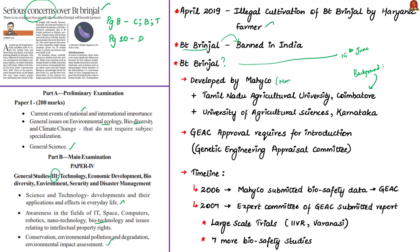For introducing a genetically modified crop in India, the crop has to undergo scrutiny by the Genetic Engineering Appraisals Committee (GEAC). In 2006, Mahyco submitted biosafety data to GEAC for permission to conduct large-scale trials. The GEAC set up an expert committee, which submitted its report in 2007, approving large-scale trials and recommending seven more biosafety studies for reconfirmation. Based on GEAC direction, the Indian Institute of Vegetable Research (IIVR) took up responsibility for large-scale trials at 10 research stations in 2007 and across 11 research institutions in 2008.